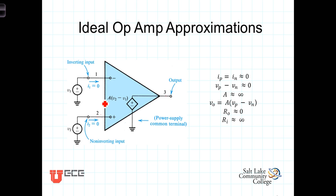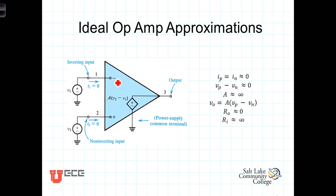The first ideal op-amp approximation is that the current going into either of these terminals is approximately zero. It's not exactly zero, but it's very, very small. When the operational amplifier is operating in its linear region — meaning the output is just a scaled version of the difference between the two voltages — the currents going into either input are so small relative to the surrounding circuit that we approximate them as zero. We reference the current going into the positive terminal as I2 or I sub P, and into the negative terminal as I sub N. Under either name, we assume the current into both terminals is zero.